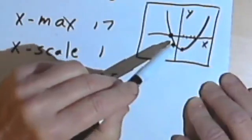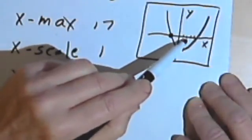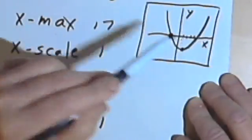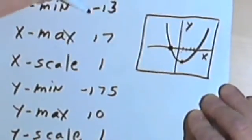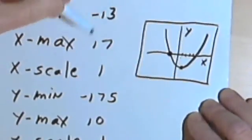then I'm gonna have my x-axis gonna read 1, 2, 3, 4, and 5. So for the x-scale, I'm going from negative 13 up to 17.